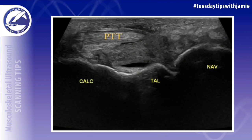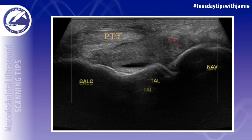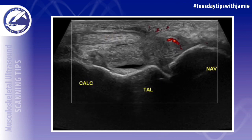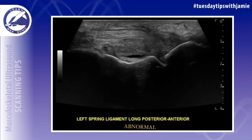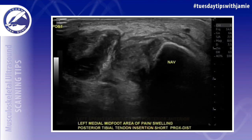This ligament is commonly affected in patients with posterior tibial tendon dysfunction. It should be evaluated for any hypoechoic thickening, disruption of the ligament fibers, hyperemia when using power Doppler, or laxity of the ligament during stress maneuvers.